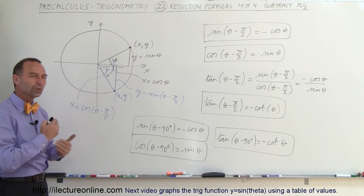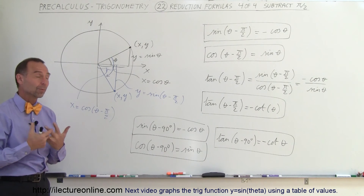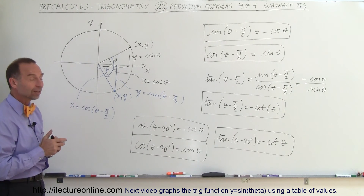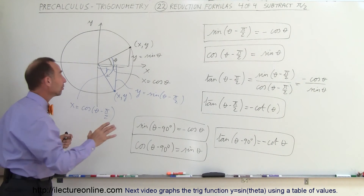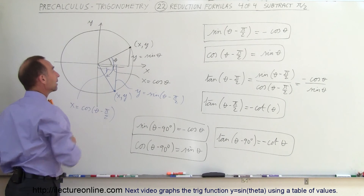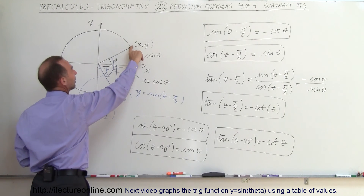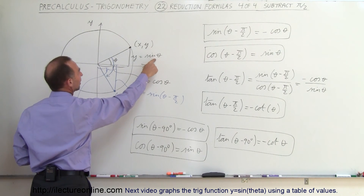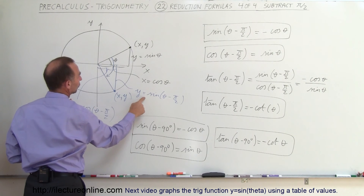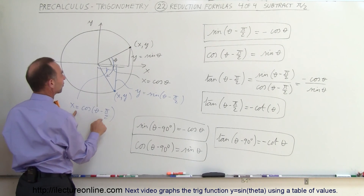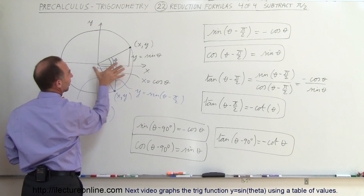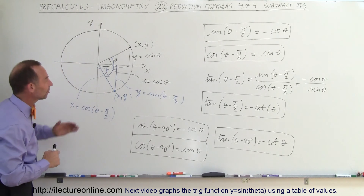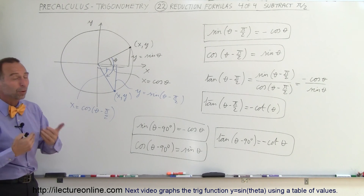Should we remember all those reduction formulas? It turns out some are handy to remember, but there's so much to remember that we can start jumbling things and confusing them. It's actually better to quickly draw the unit circle, take a look at it, and see that this value equals that value — both positive — so I can say sine of theta equals cosine of theta minus π/2.